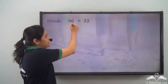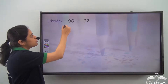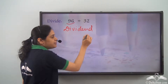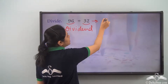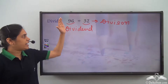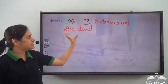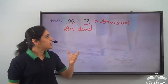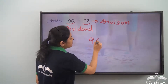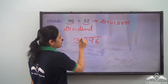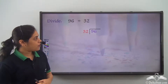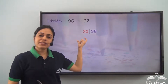We need to divide 96 by 32. 96 is the dividend — the number to be divided — and 32 is the divisor, that is the number by which I need to divide. So 96 divided by 32. Now the first step is to write it in the standard division format.